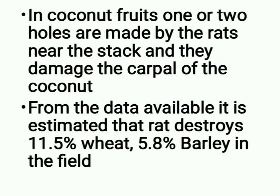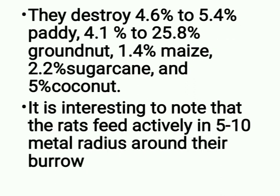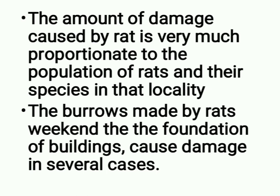In coconut fruits, one or two holes are made by the rats near the stalk and they damage the kernel of the coconut. From data available, it is estimated that rats destroy 11.5% wheat, 5.8% barley, 4.6% to 5.4% paddy, 4.1% to 25.8% groundnut, 1.4% maize, 2.2% sugarcane and 5% coconut in the field. Rats feed actively in a 5 to 10 meter radius around their burrow. The burrows made by rats also weaken the foundations of buildings.